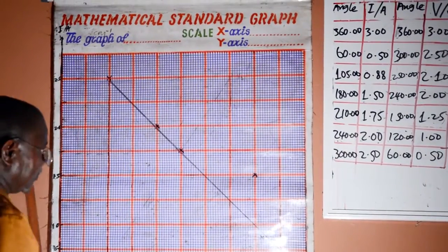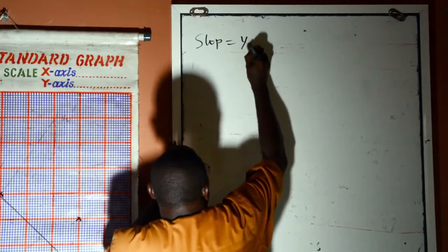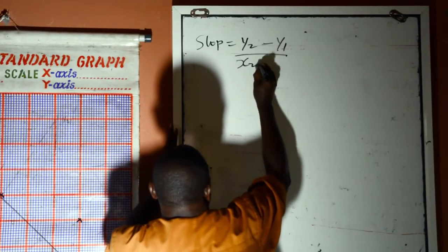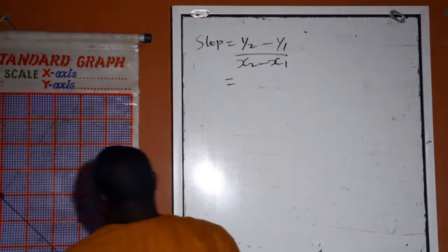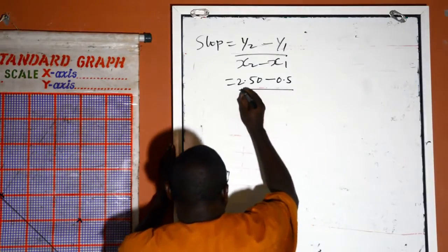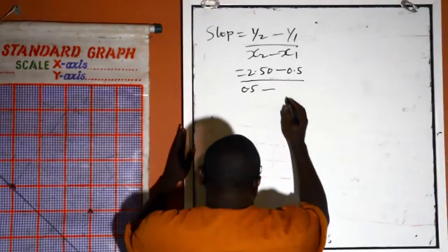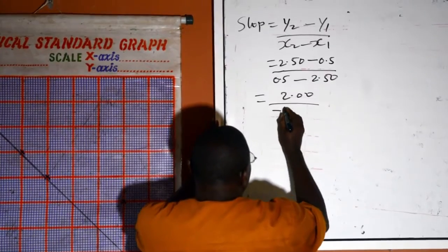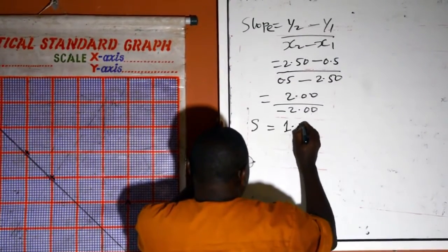Now we want to calculate the slope. Slope is equal to y2 minus y1, which is divided by x2 minus x1. y2 here is 2.5 minus 4.5, x2 is 4.5, x1 is 2.5. So this one will give us 2.00, this one will give us minus 2.00. Slope is equal to 1.00.